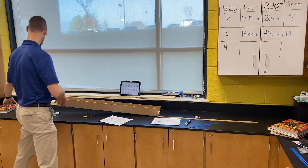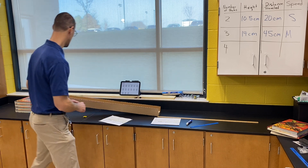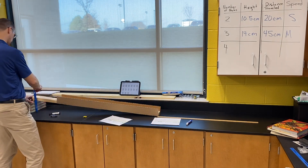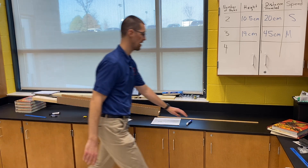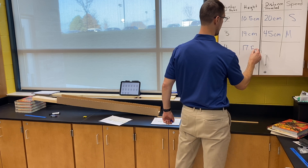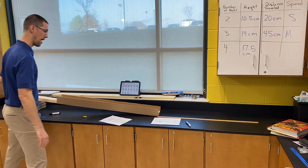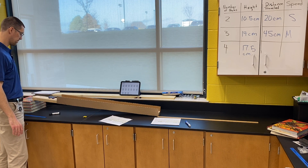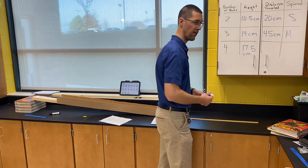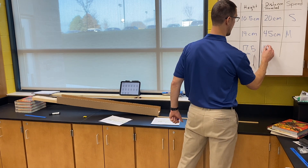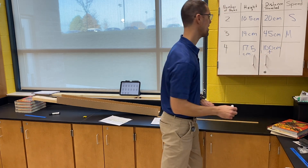Now we're going to add the final book to our stack. Now we have our four-book high stack. We're going to record that height: 17 and a half centimeters. Write that down. Now let's see what happens when we roll the car from that height. That one exceeded the length of our metric stick, so we're going to write 100 — since there are 100 centimeters in a meter — but we're going to say 100 centimeters plus, because it went beyond that. And this one went fast.